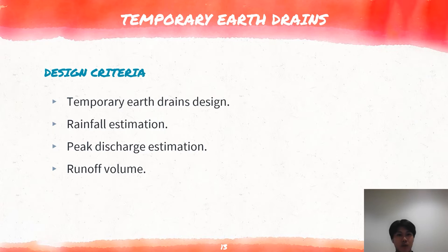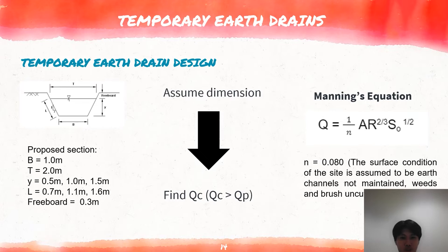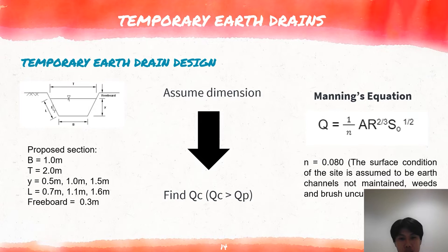Next, I will briefly explain the design criteria for the temporary earth drains: rainfall estimation, peak discharge estimation and runoff volume. The design of the temporary drainage must withstand the peak discharge on the site. In this project, we design the temporary earth drains according to MASMA 2nd edition. I will be presenting the design for temporary earth drains. The design for temporary drainage is based on the best hydraulic section of the trapezoidal shape open channel. The trapezoidal channel is more suitable than a rectangular channel with a 90-degree wall as it has a milder side slope and can withstand a larger capacity of water. After designing the shape of the channels, we move on to assume the dimensions of the temporary earth drains, and we find the capacity flow using Manning's equation.